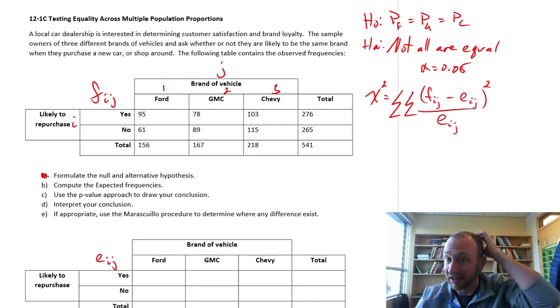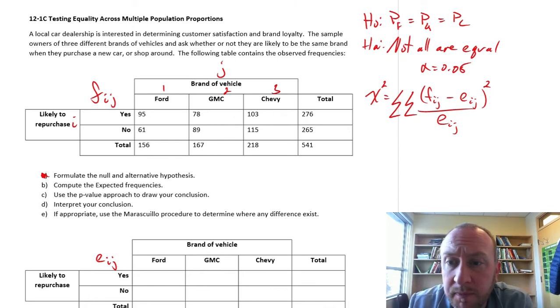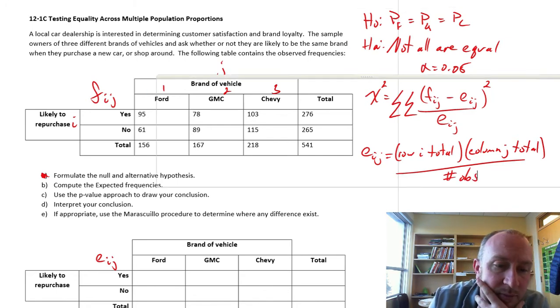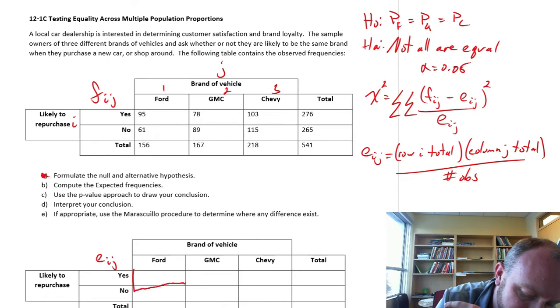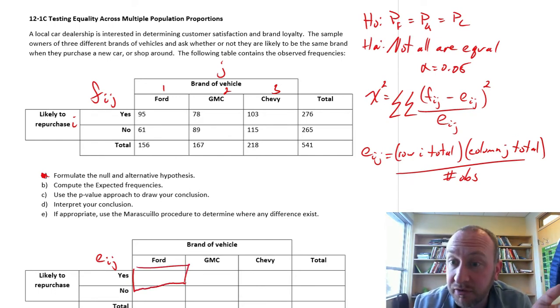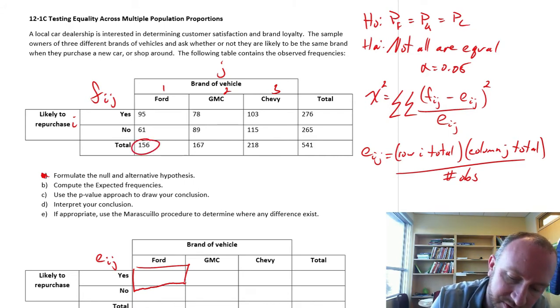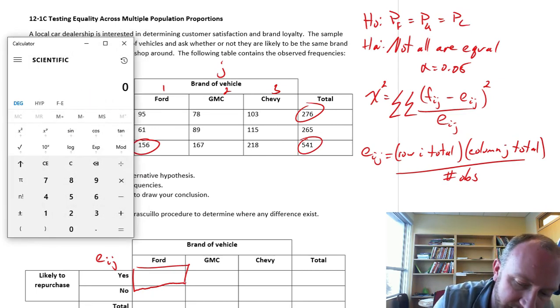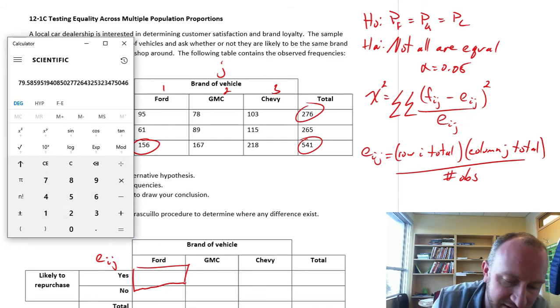So we have to first obtain all those expected frequencies. The formula for that is relatively straightforward. We just need to calculate the product of the relevant row i total multiplied by column j total, and we divide it by the total number of observations. For example, if we're looking at this one here, the number of Ford owners who are likely to repurchase, the expected frequency would be the column total times the row total divided by the total number of observations. So here we would have 156 times 276 divided by 541, which gives us about 79.6.